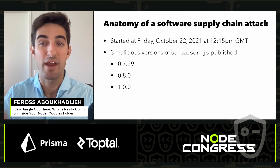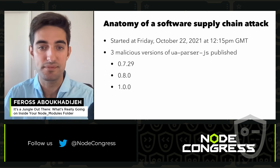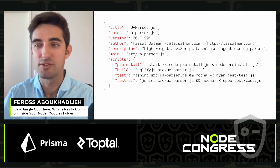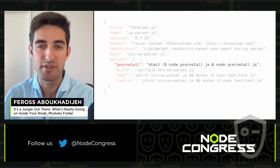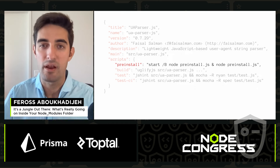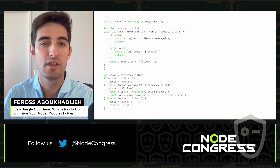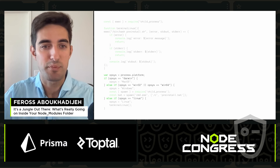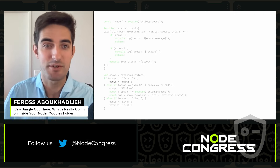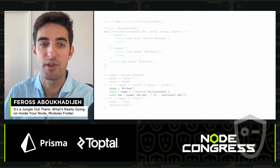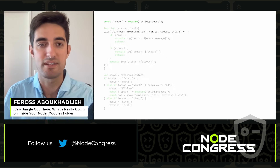Malware was added to these packages that would execute immediately whenever anyone installed one of the compromised versions. The package.json file for the compromised version uses a pre-install script, so this command will run automatically any time this package is installed. The first thing the script does is split based on the operating system of the target. On Mac, nothing happens, but Windows and Linux users aren't so lucky — command prompt is spawned for each platform using child_process.exec.